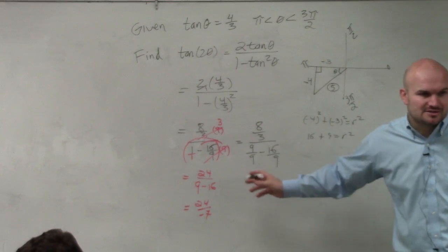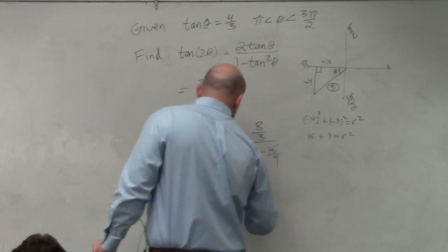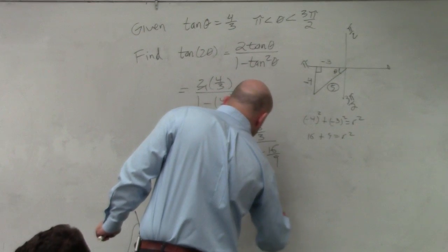But now they have common denominators, so now I can subtract them. So now I have 8/3 divided by negative 7/9.